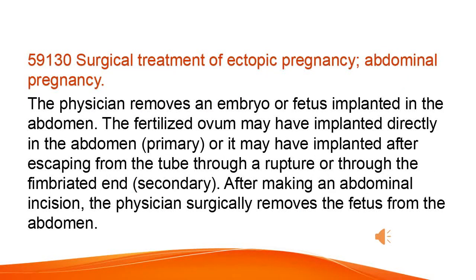Surgical treatment of ectopic pregnancy, abdominal pregnancy. The physician removes an embryo or fetus implanted in the abdomen. The fertilized ovum may have implanted directly in the abdomen, primary, or it may have implanted after escaping from the tube through a rupture or through the fimbriated end, secondary.